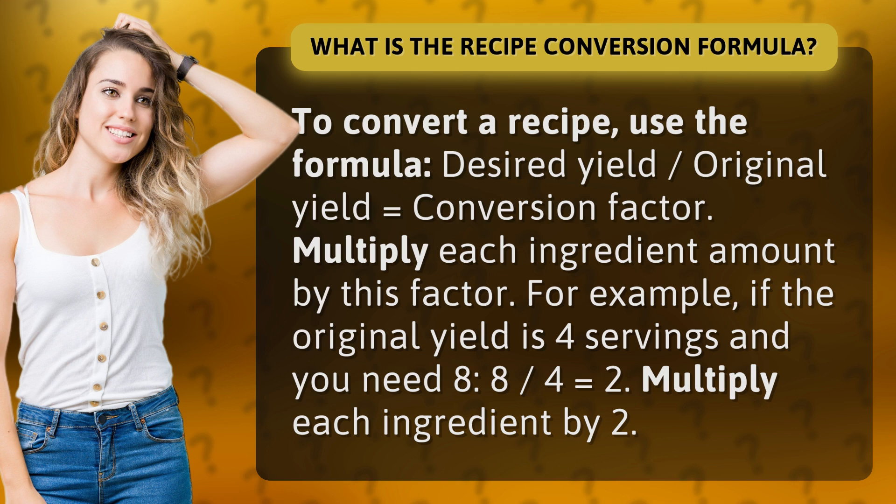Multiply each ingredient amount by this factor. For example, if the original yield is four servings and you need eight: eight divided by four equals two, so multiply each ingredient by two.